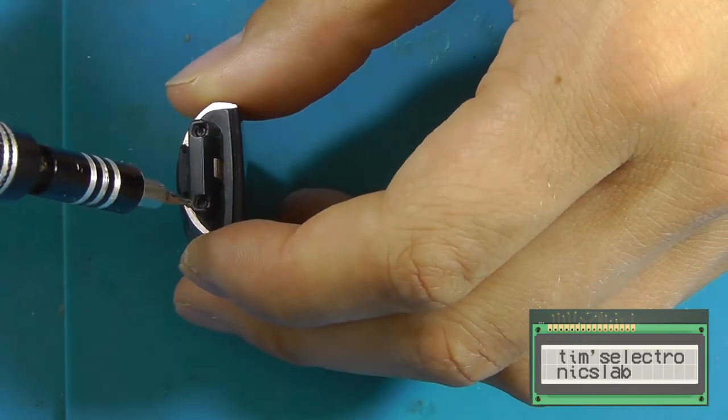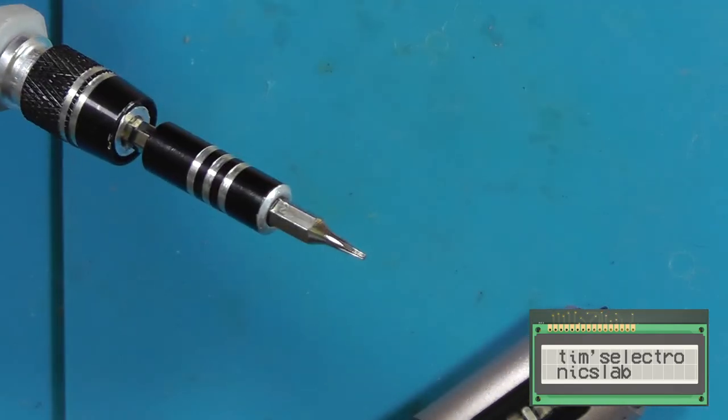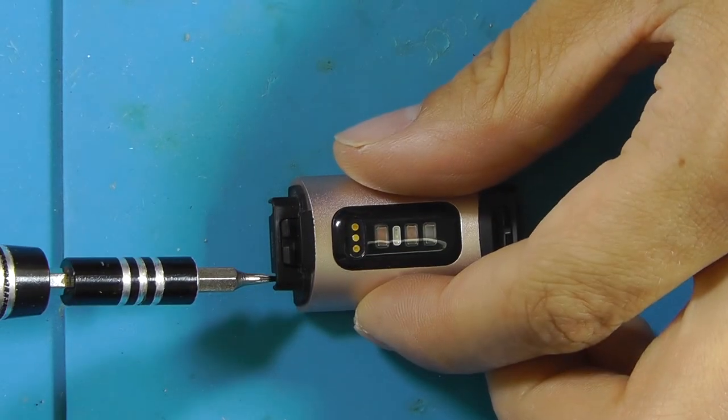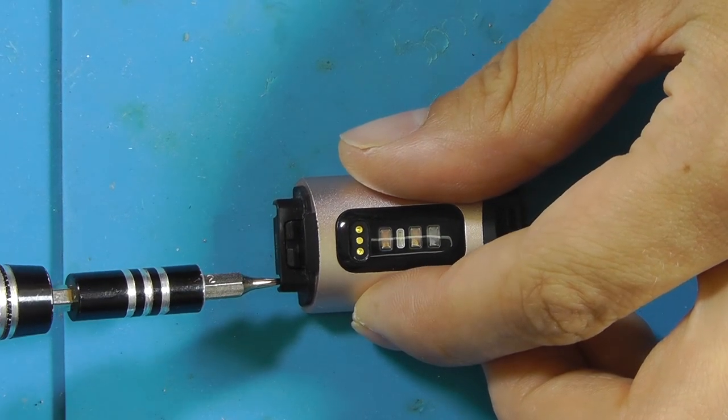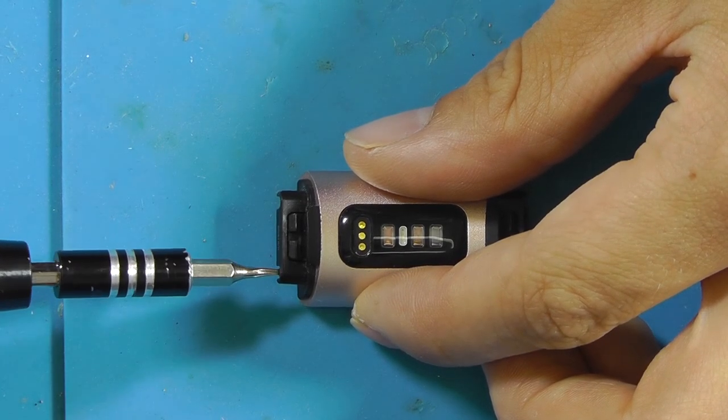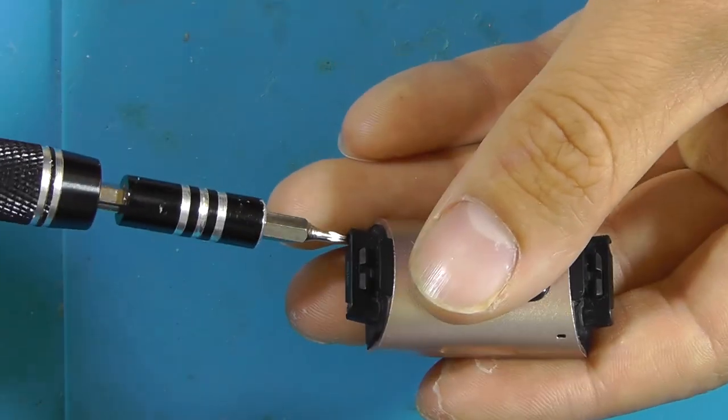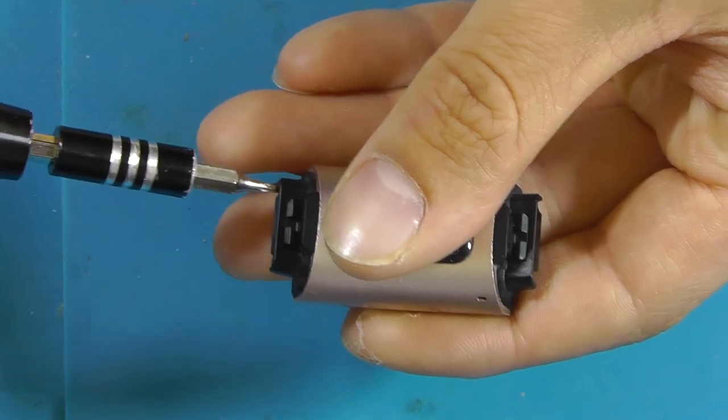So let's try to figure that out. It's a Torx I think it's a T2, so very small. Fortunately my screwdriver kit has a bit that actually fits this screw.